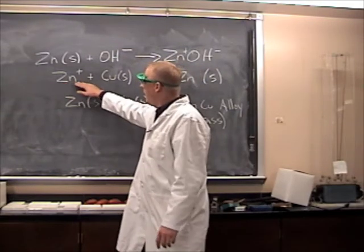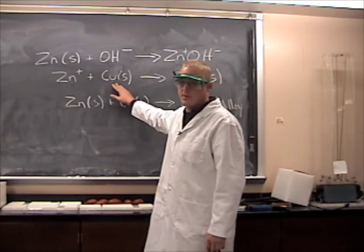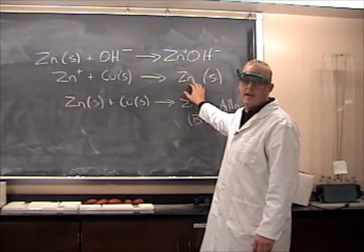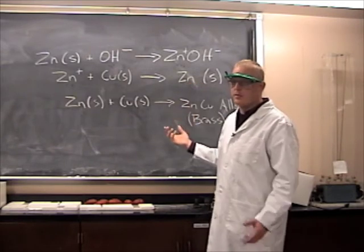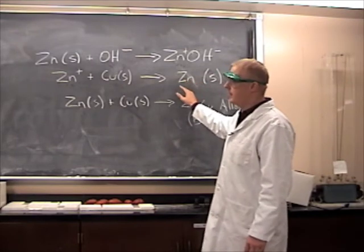Take those zinc ions, put it in the presence of copper solid, which is what that penny was. And we put that penny in there and the zinc deposits itself on that copper. So you end up with what looks like a silver penny. It's really a zinc penny covering up that copper.